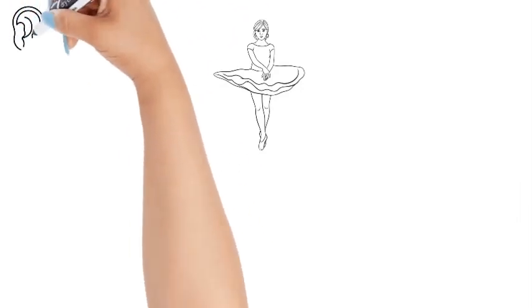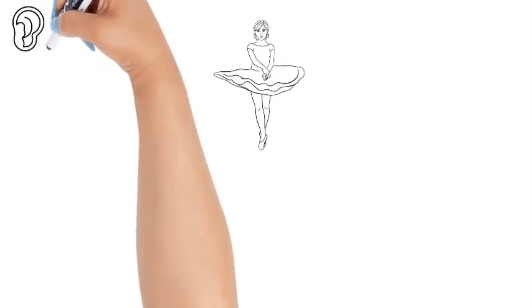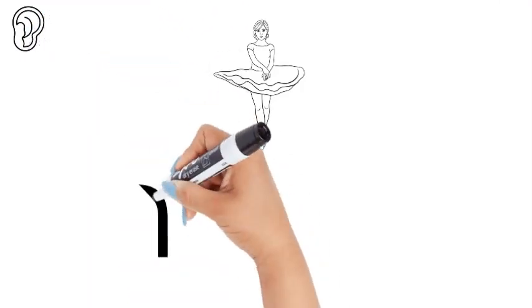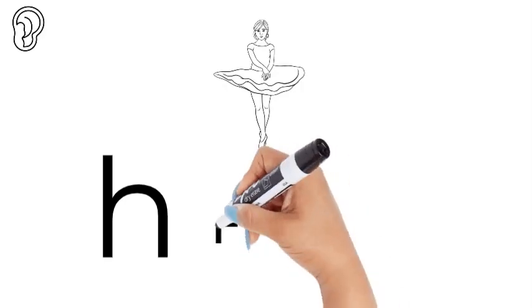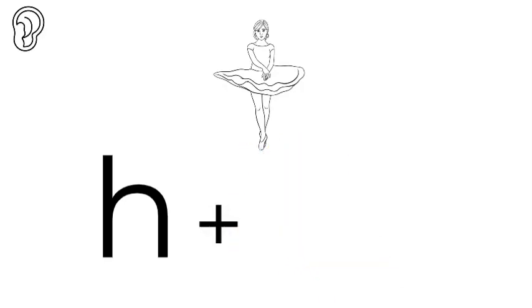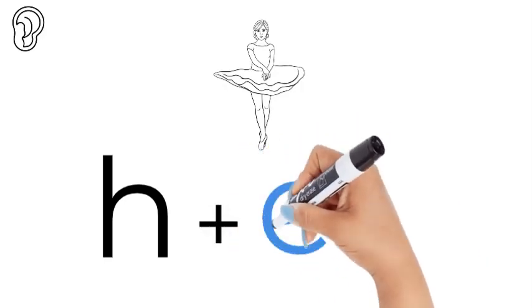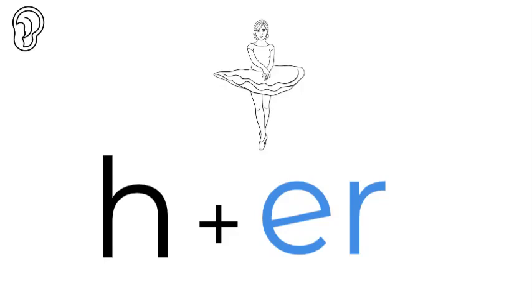What sounds do you hear in the word her? What's the first sound that you hear? Her. You hear an er sound, and the er is written as an e and an r. It's very common. Her. An e and r.